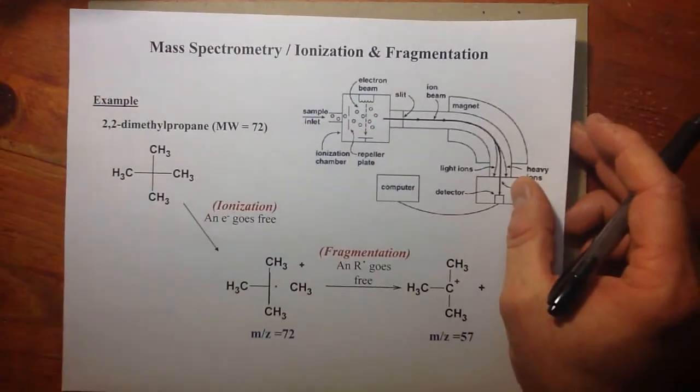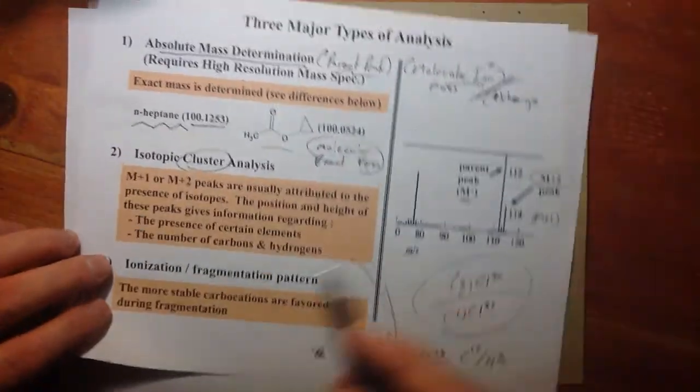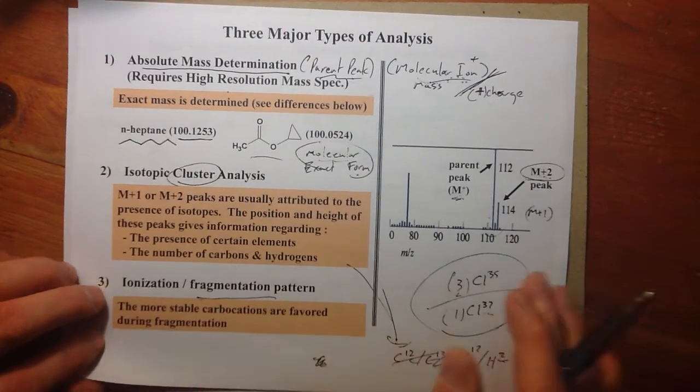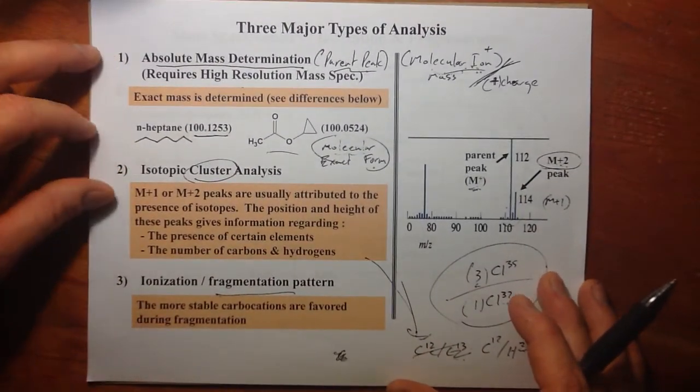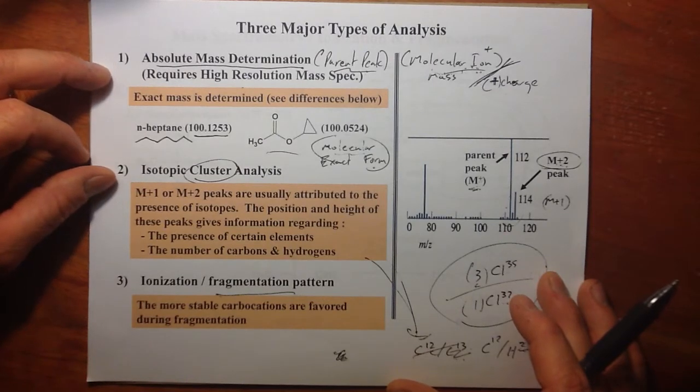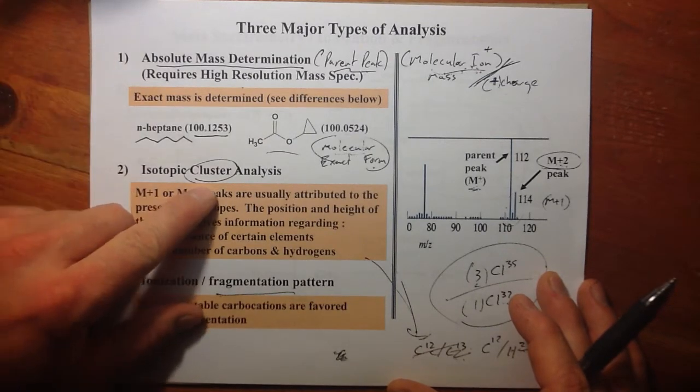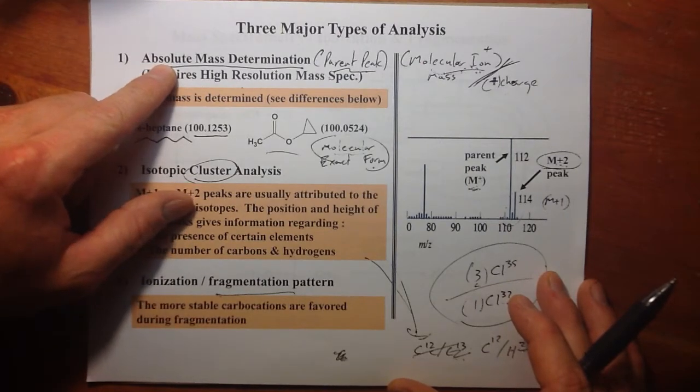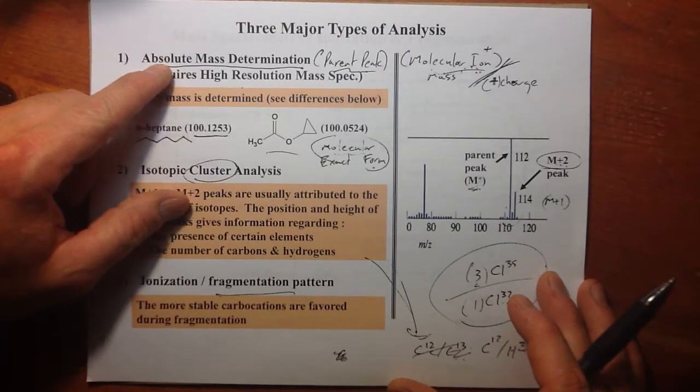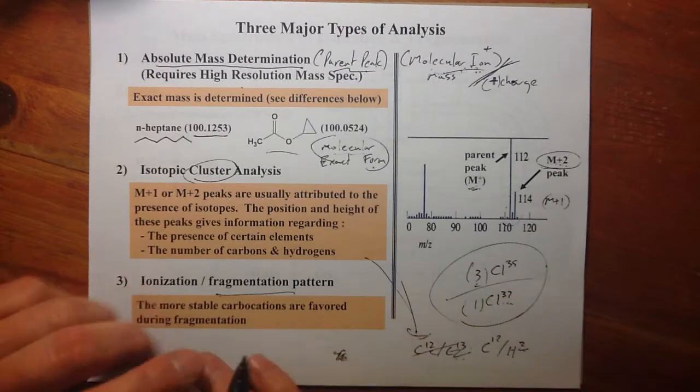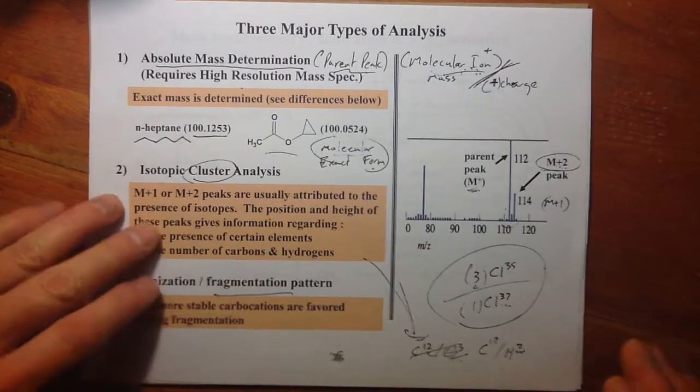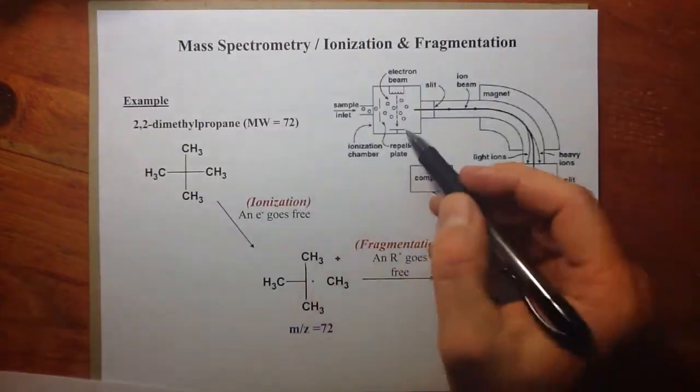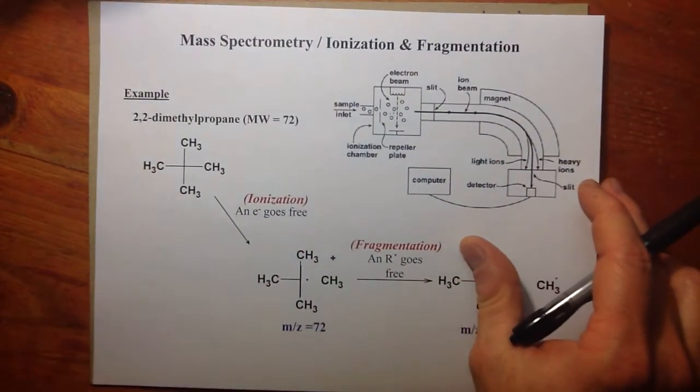I want to end with mass spectrometry in terms of discussing fragmentation patterns. How can we predict how something will fall apart? Each of these have looked at the parent peak, clusters around the parent peak, exact determination of the mass for the parent peak. Now we're going to look at fragmentation, how those balls would fall apart. How can we predict that?